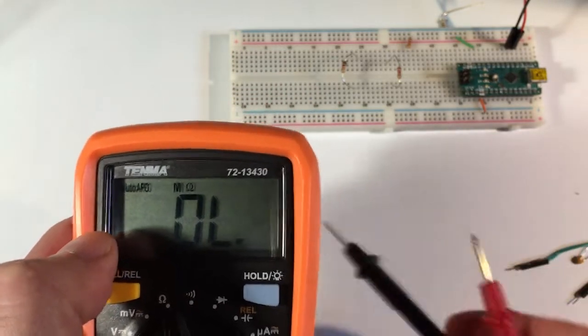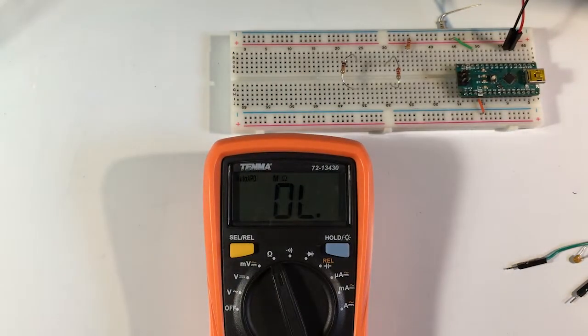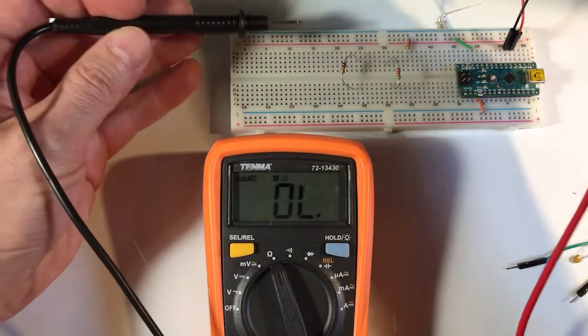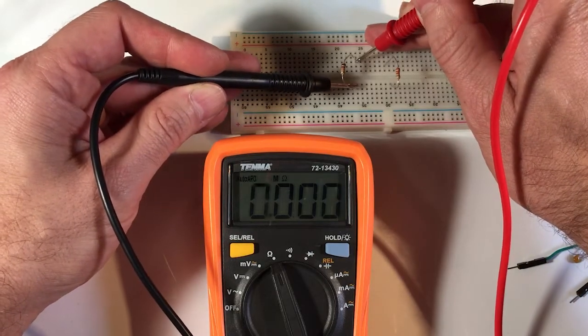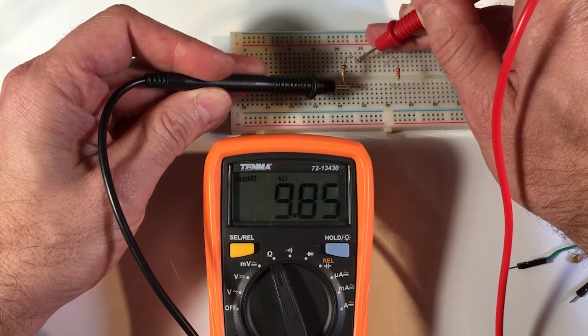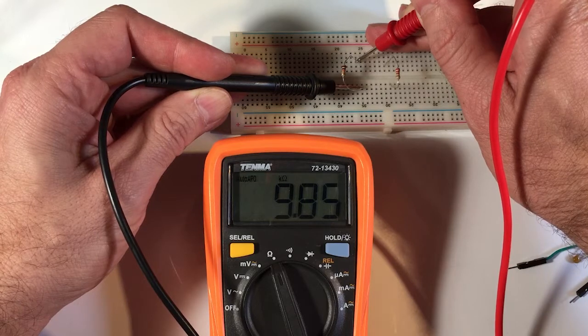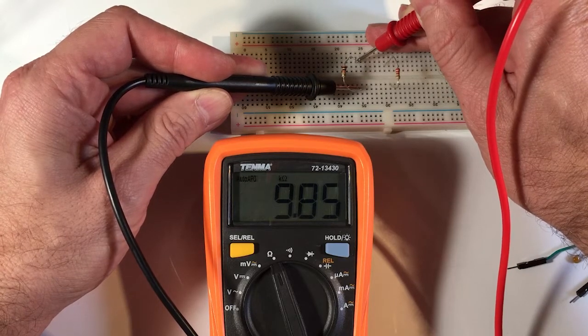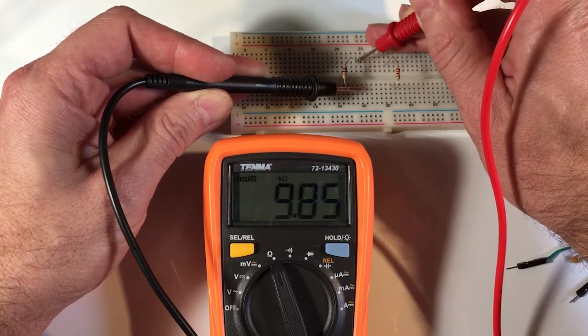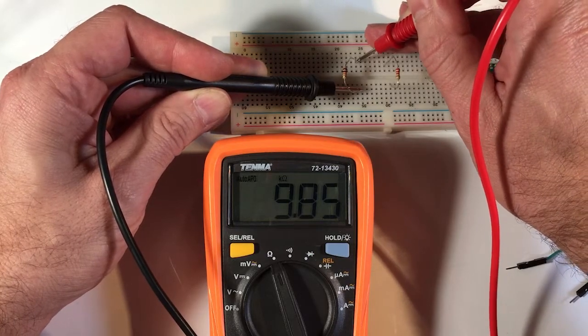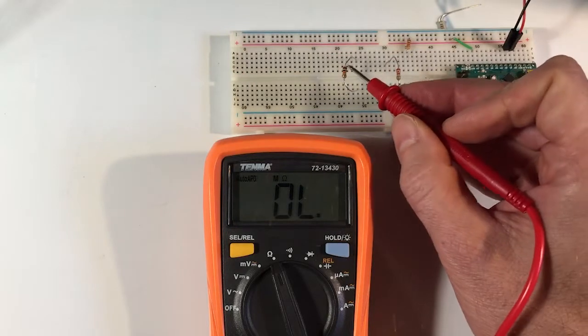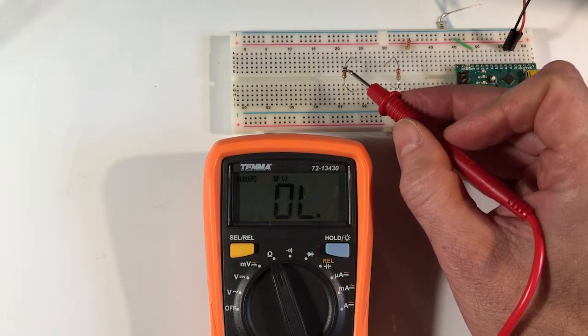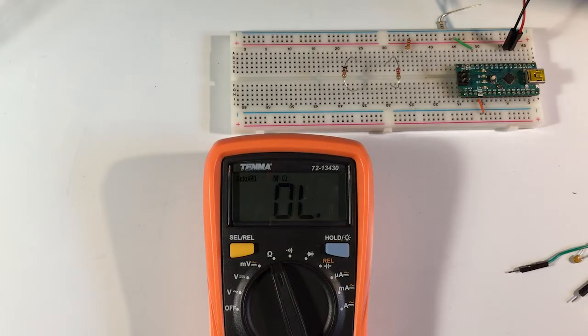So I could measure a resistor. I have one over here plugged into my breadboard. I could touch the multimeter to the wires on each end of the resistor, and you could see there it's reading 9.85 kilohms or 9,850 ohms. So that's probably a 10 kilohm resistor, and I could determine that by reading the color code. It's brown, black, orange. That's a 10 kilohm resistor, so it's within its tolerance.